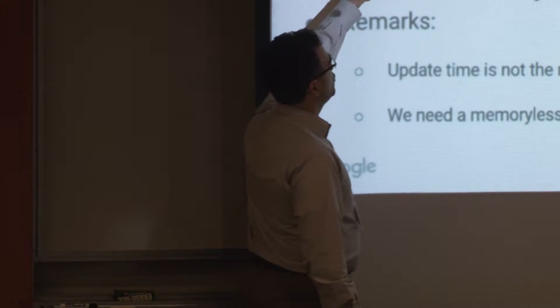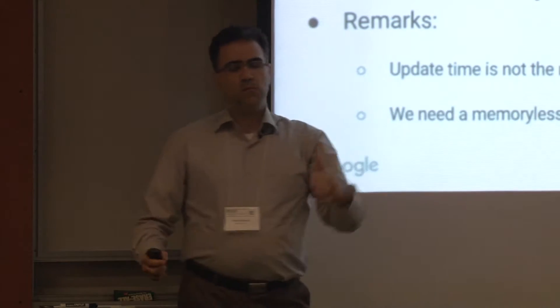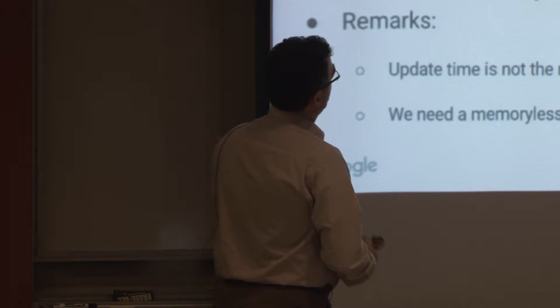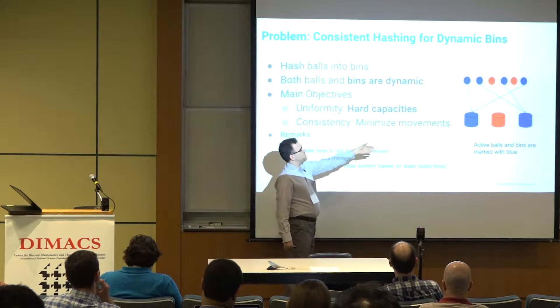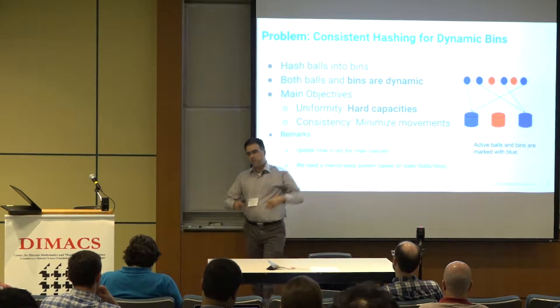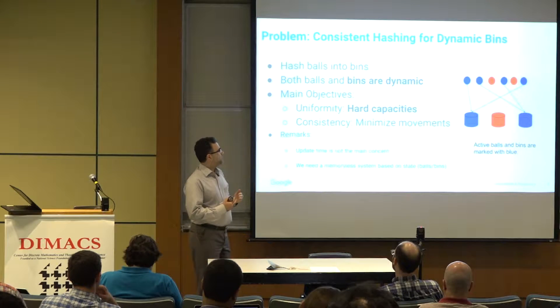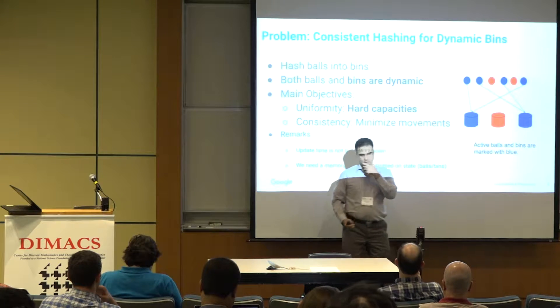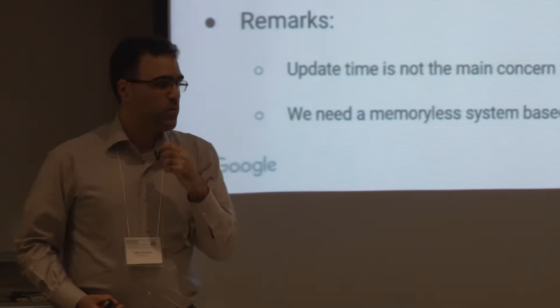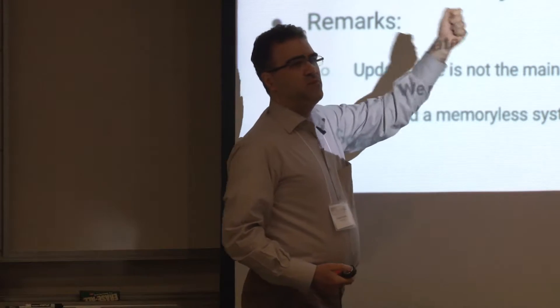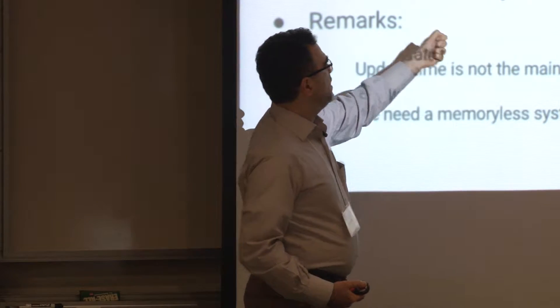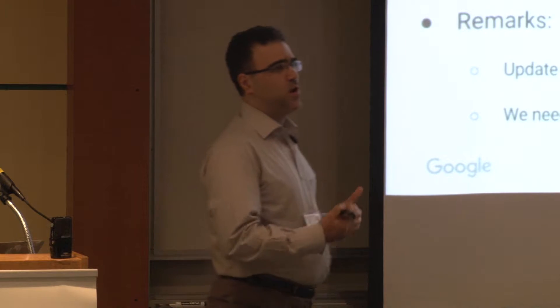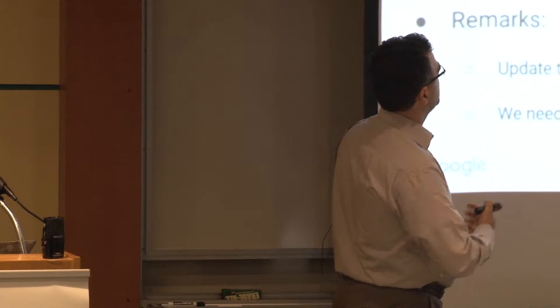Definitely, we want to achieve good load balancing, so we want to make sure that no one bin gets too many balls. We are in a dynamic environment. Whenever a bin fails or a ball is removed or added, we may want to recompute and reallocate the balls that are not allocated anymore. We want to make sure that upon any change in the system, when we remove or add a ball or a bin, the number of movements in the system or changes in the system is also minimized. That's what I call hashing in the dynamic environment.